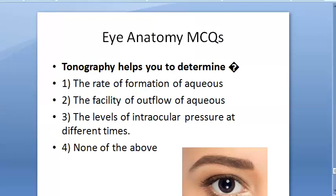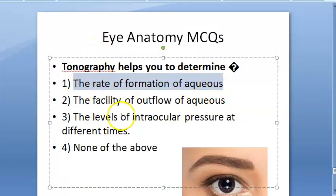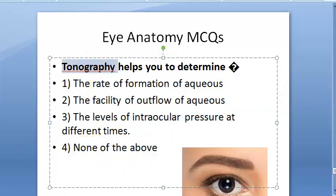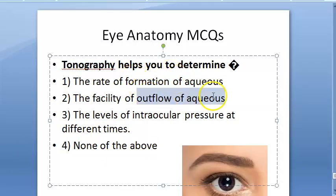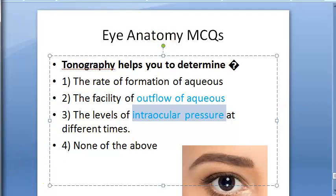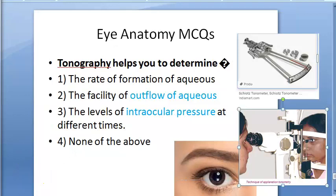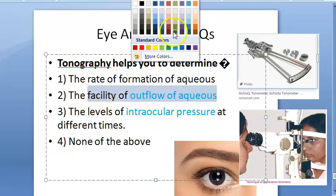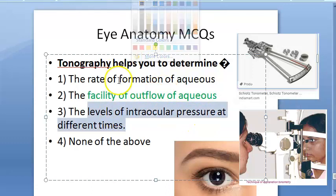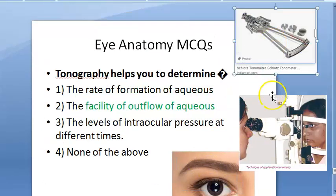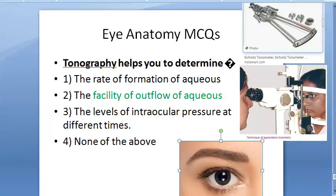Tonography helps you to determine — rate of formation of aqueous, outflow of aqueous, intraocular pressure, or none of the above? According to the textbook, tonography is a non-invasive technique for determining the facility of aqueous outflow, the C value. The correct answer is B: facility of outflow of aqueous humor.